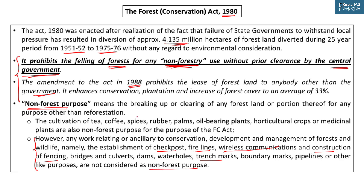However, activities like plantation of tea, coffee, spices, rubber, palm, oil bearing plants, horticulture crops, and even medicinal plants — all these plantation activities are considered non-forest purpose. So for non-forest purpose, you cannot divert land without the consent of the central government.